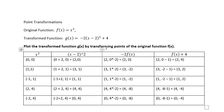The next part of the transformation is multiplying by negative 2. Since f(x) represents the y values of the function, we multiply each y value by negative 2. The point (2,0) stays (2,0) because 0 times negative 2 is 0. The point (3,1) becomes (3,-2) after multiplying the y value by negative 2.